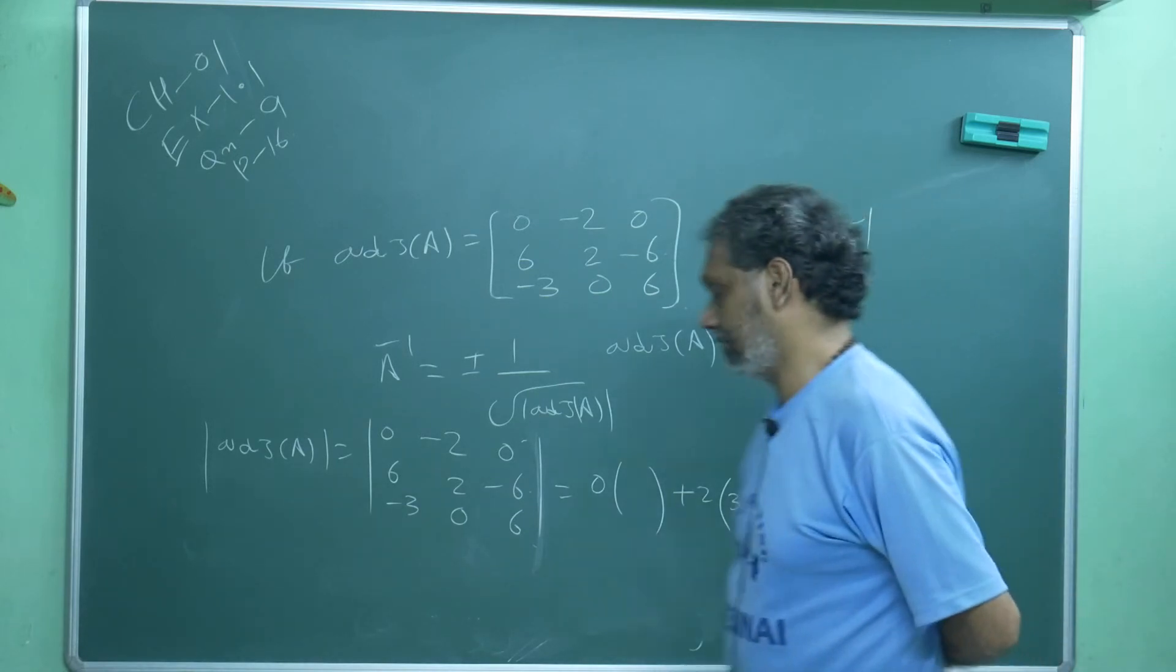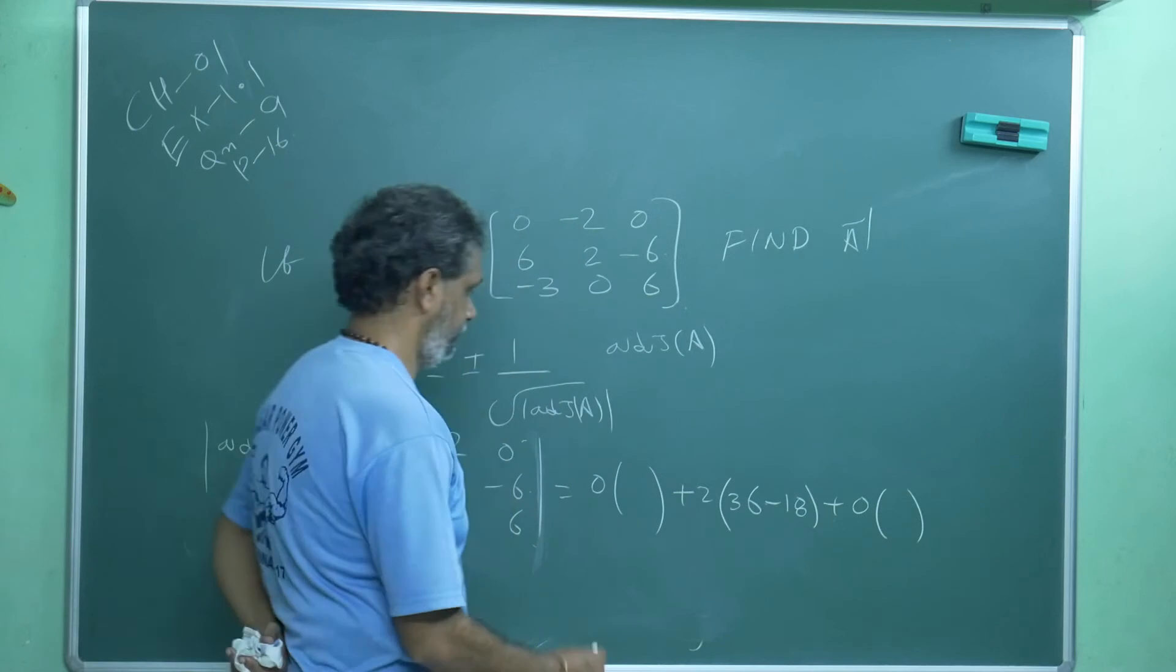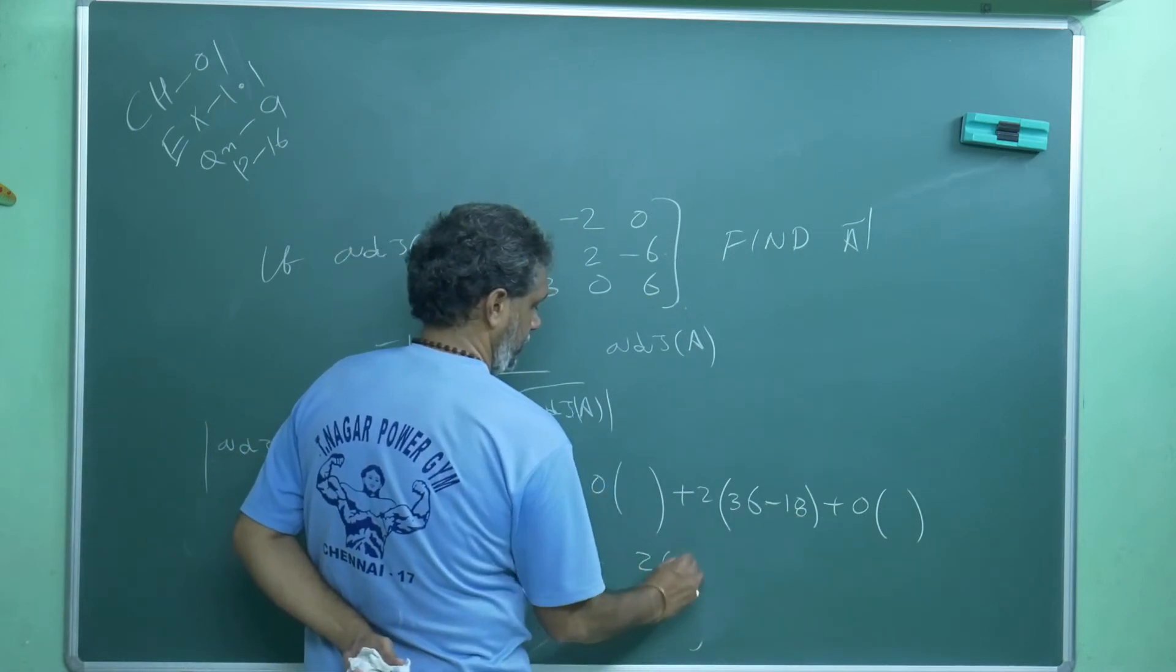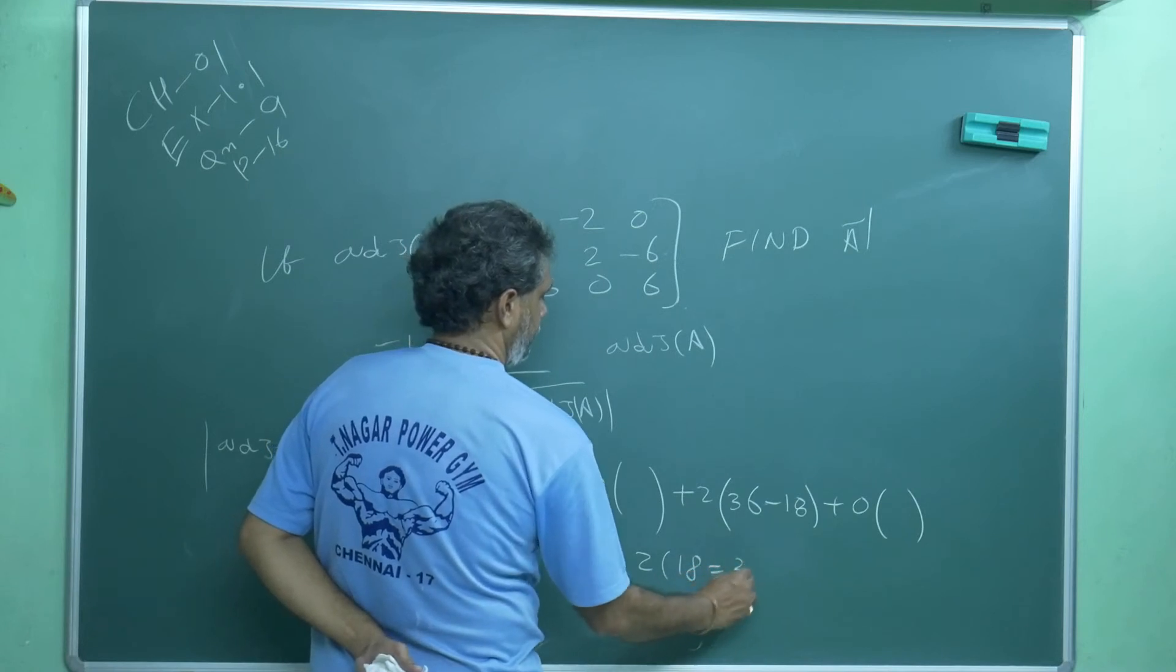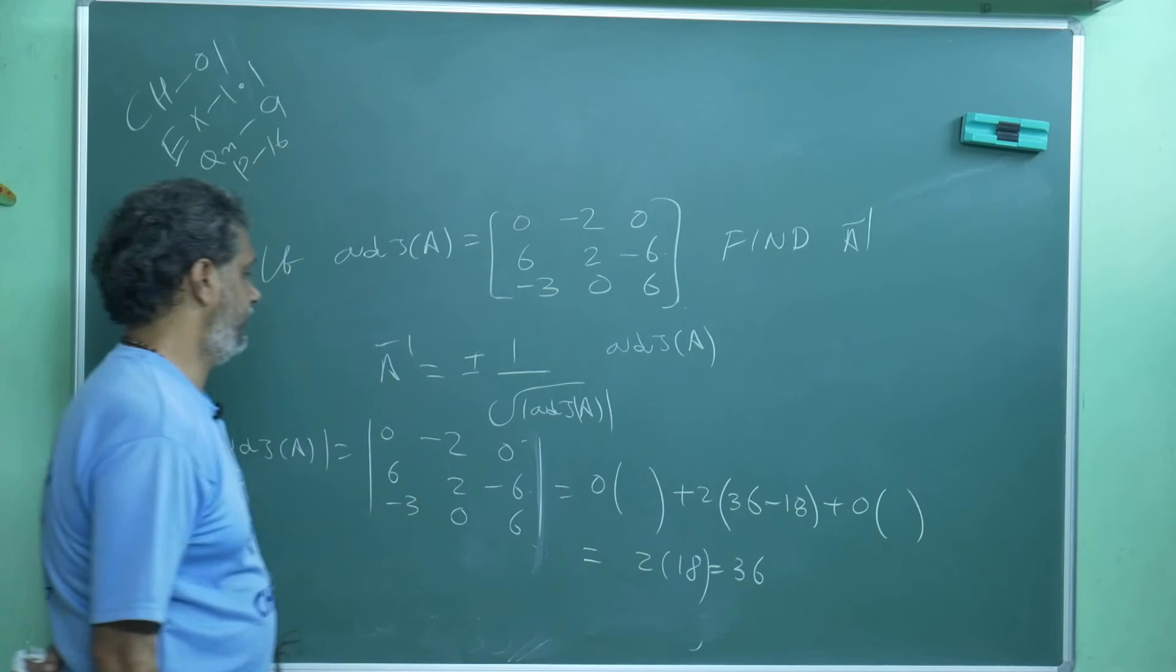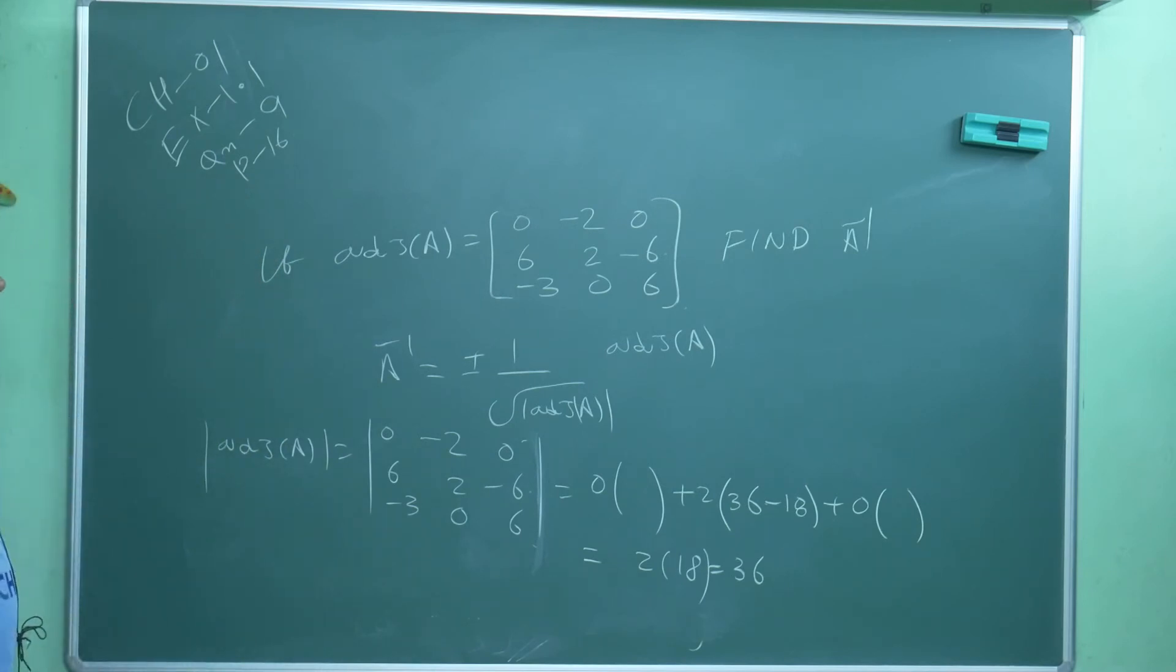So this is equal to: this is waste, this is waste. 2 into 18 is 36. So determinant of adjoint of A is 36. Once this is available, A inverse is 1, I can write.